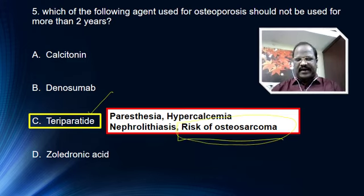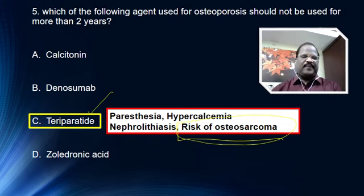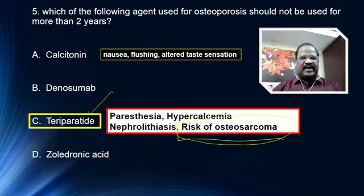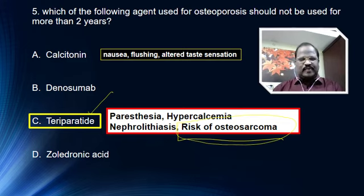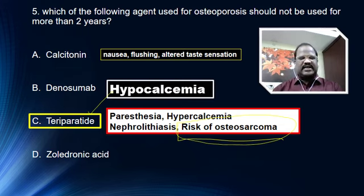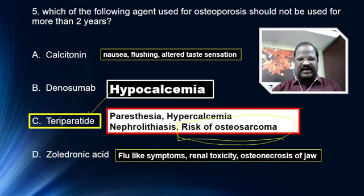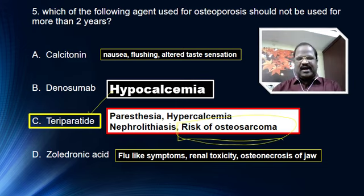So teriparatide should not be used for more than two years because long-term use carries risk of osteosarcoma. The other options: calcitonin causes side effects like nausea, flushing, and altered sensation. Denosumab, a monoclonal antibody useful for preventing osteoporosis, may cause hypercalcemia. Zoledronic acid, a bisphosphonate given intravenously, causes flu-like symptoms, renal toxicity, and on chronic use may cause osteonecrosis of the jawbone.